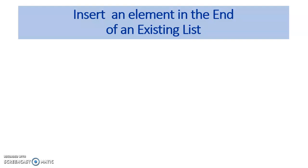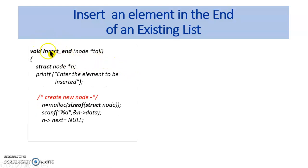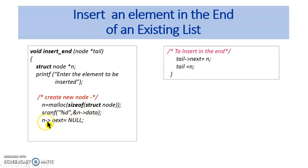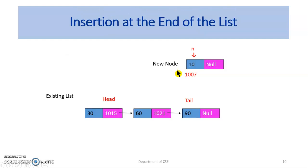Next, let us see the code for inserting the element at the end of the list through the function insertEnd, with the tail pointer passed as an argument. Create a new node by allocating memory through the malloc function. Then get the data to be inserted from the user and set as n.data. Then set n.next equal to null. To insert this new node at the end of the list, set tail.next to the new node. Then set the new tail as n. By this, the new node is linked to the end of the list. Let us observe how the insertion at the end of the list is carried out.